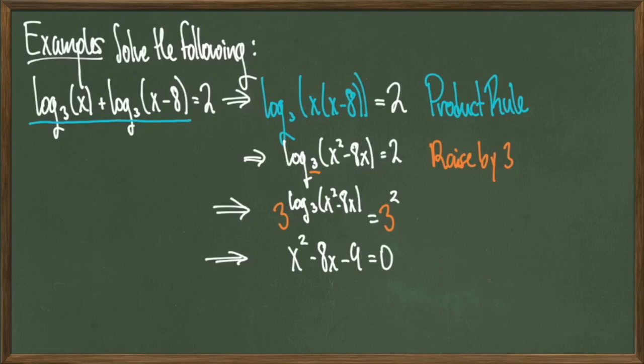This is because of the cancellation that occurs with 3 raised to log base 3 of x² - 8x. That simply just leaves you with x² - 8x, and then I bring the 9 that comes from 3² over to the left hand side to get x² - 8x - 9 = 0.